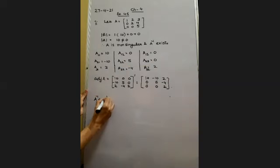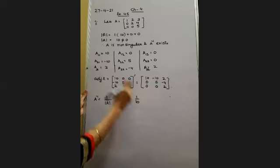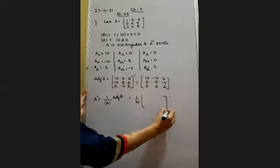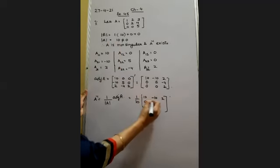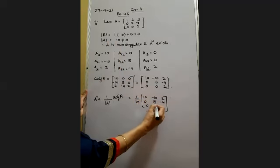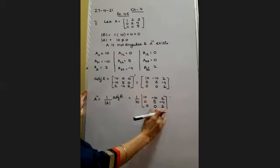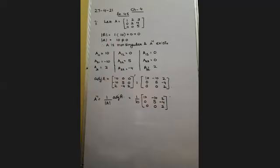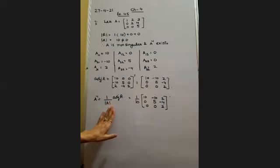The adjoint of A is formed by placing cofactors at their positions and taking the transpose: [10, −10, 2; 0, 5, −4; 0, 0, 2]. A inverse = (1/10) × adjoint of A. The determinant was 10. Question numbers 8 and 9 you will do yourself — they are also 3×3 inverse problems.